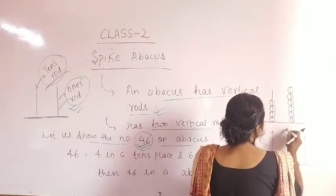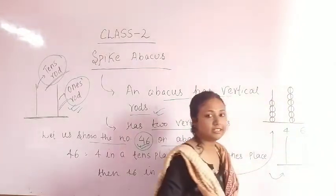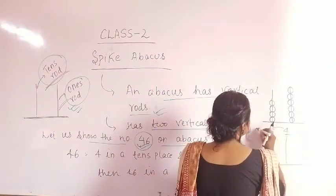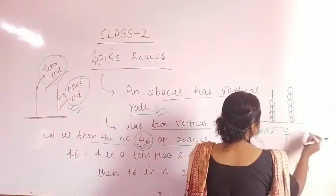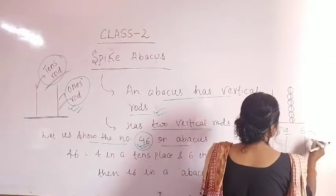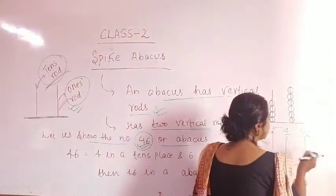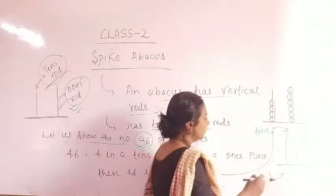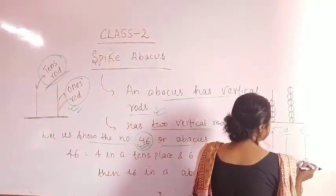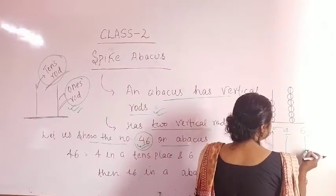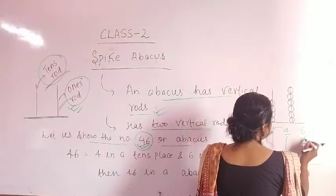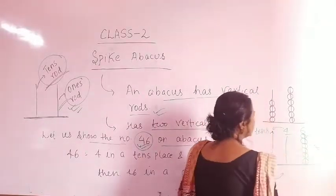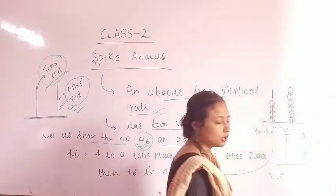46 is made of 4 and 6. We place 4 in the 10's place and 6 in the 1's place. So first we draw 6 beads on the 1's rod: circle 1, 2, 3, 4, 5, and 6. That is 6 beads in the 1's vertical rod.